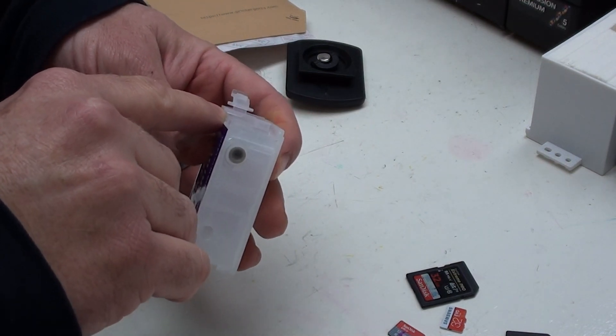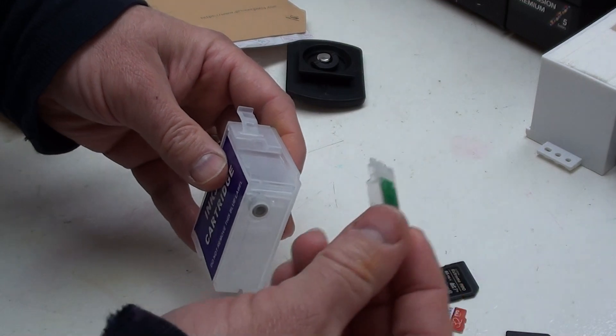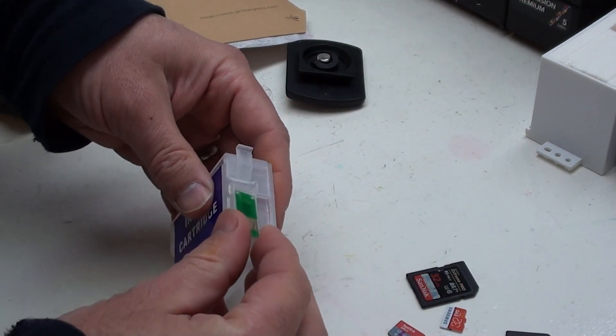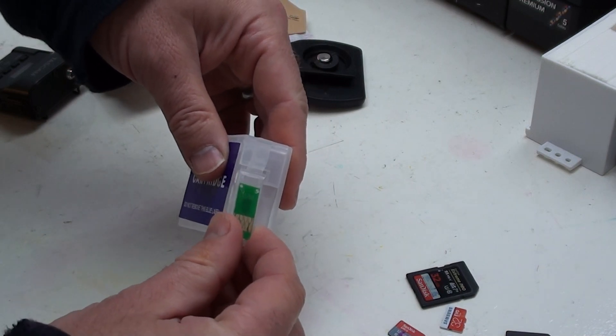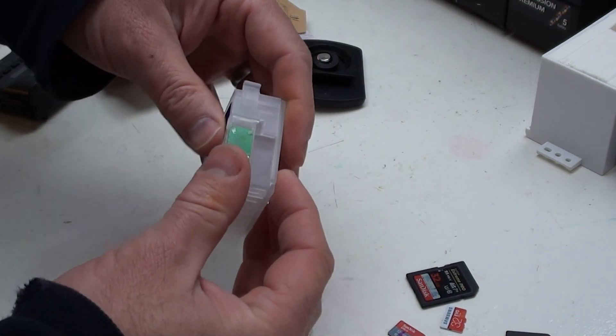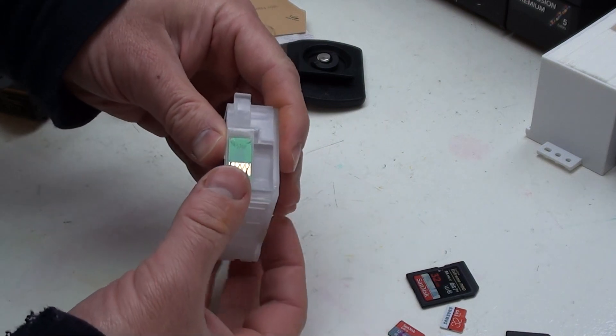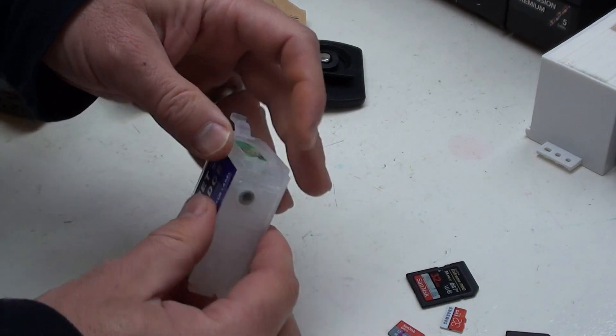To put it back in, after removing it from the other cartridge, you slide the teeth back behind there. Make sure it lines up, and then press down here. That should hold everything in place.